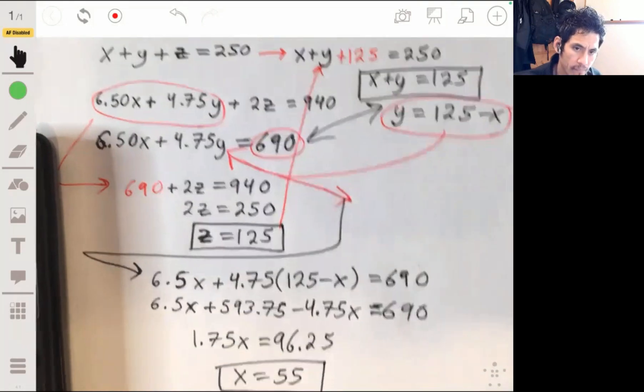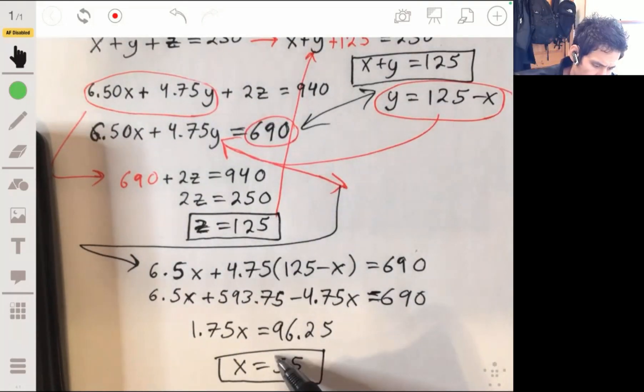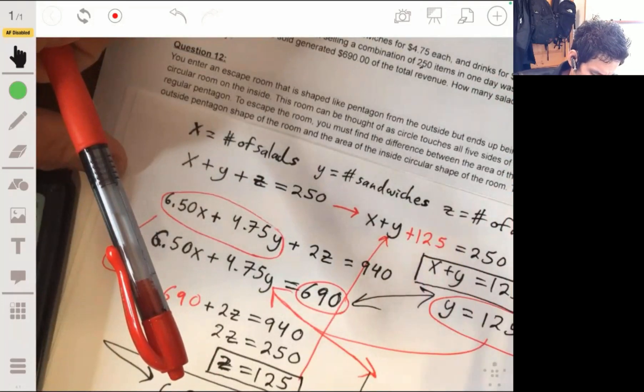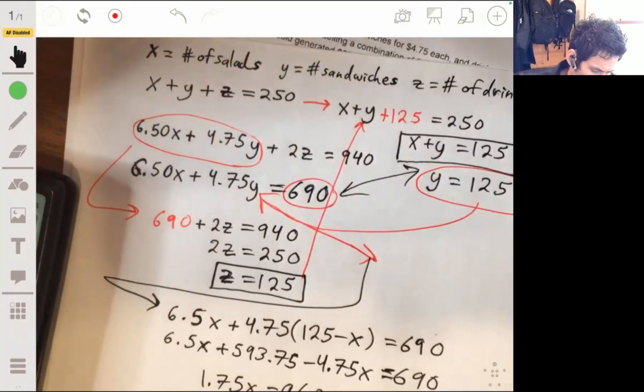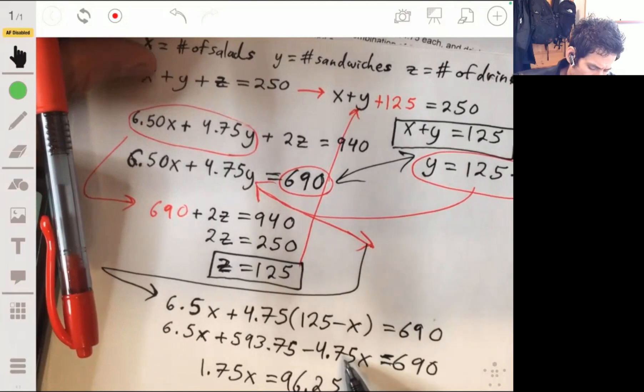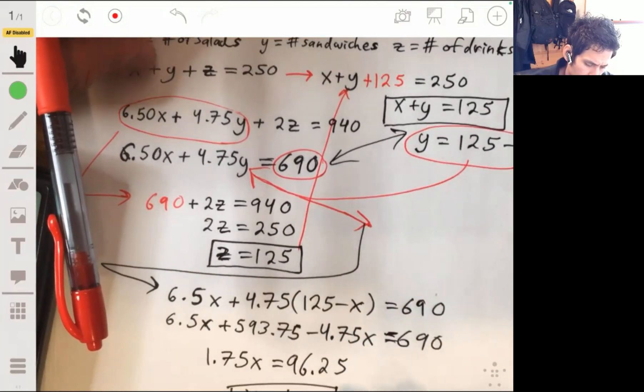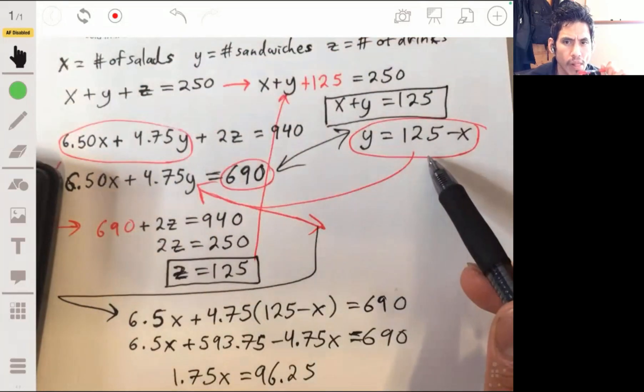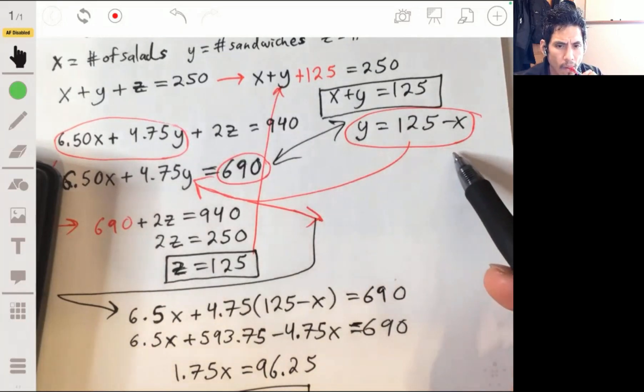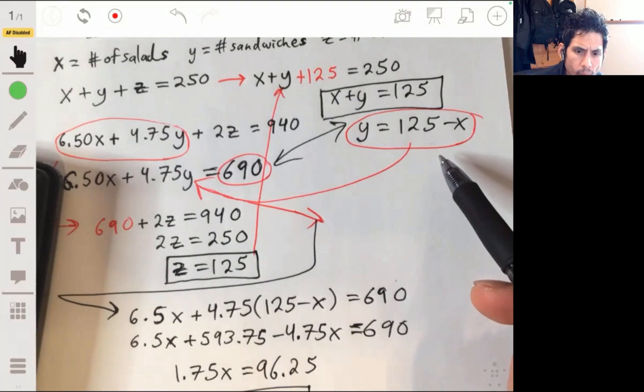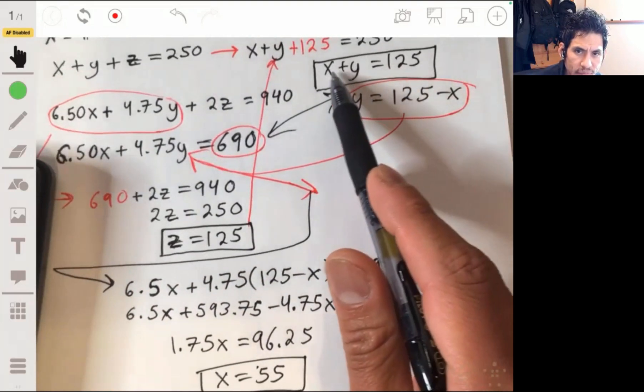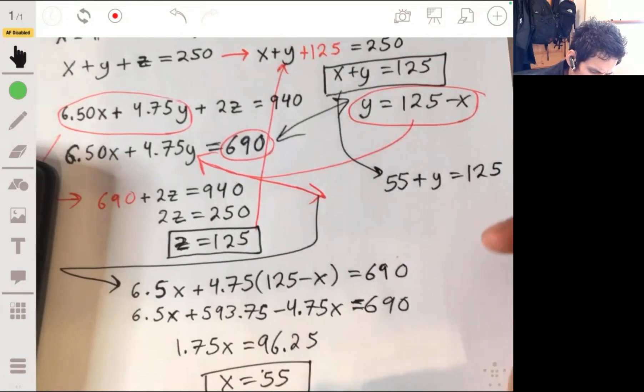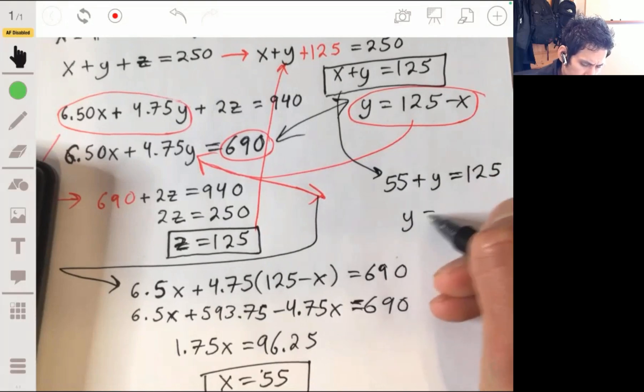If X is 55, and wait hold on, are we trying to find the number of salads? Yeah, so then 55 plus Y equals 125, and then Y will then just be 70.